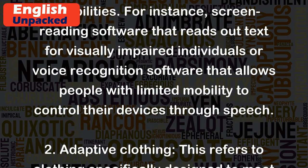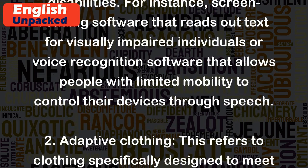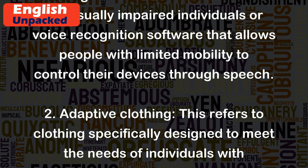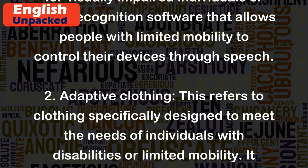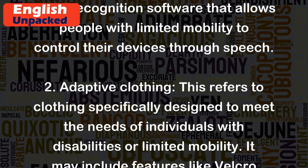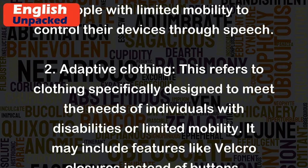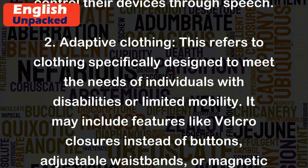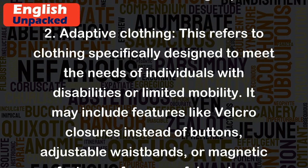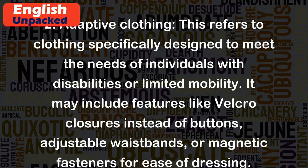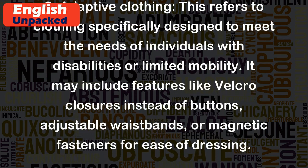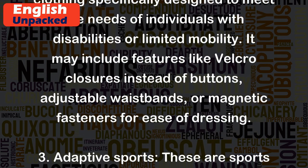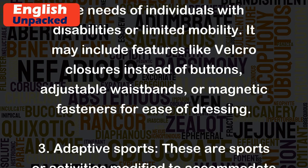2. Adaptive clothing. This refers to clothing specifically designed to meet the needs of individuals with disabilities or limited mobility. It may include features like Velcro closures instead of buttons, adjustable waistbands, or magnetic fasteners for ease of dressing.